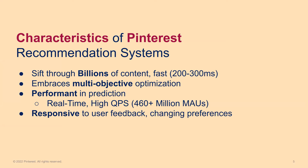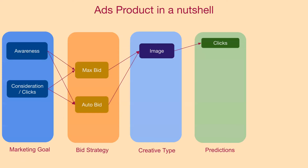The design choices we make in terms of ranking models need to adhere to these characteristics. These models also need to be responsive to user feedback, which can change within a minute or so. The ads product can look complex in a nutshell: different advertisers can have different objectives, from creating brand awareness to driving more clicks. Advertisers can choose how they want to spend their budget and choose among different creative types, which could be as simple as an image.